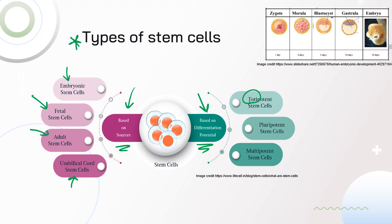Totipotent stem cells are totally able to differentiate into everything — really only the zygote is totipotent, so it can differentiate into fetal cells, liver cells, brain cells, umbilical cord cells, or placenta cells. Once we have the blastocyst, we lose a lot of potential and now only have pluripotent cells. Embryonic stem cells are pluripotent — the part that becomes the embryo cannot become placenta, and vice versa, so some differentiation ability has been lost.